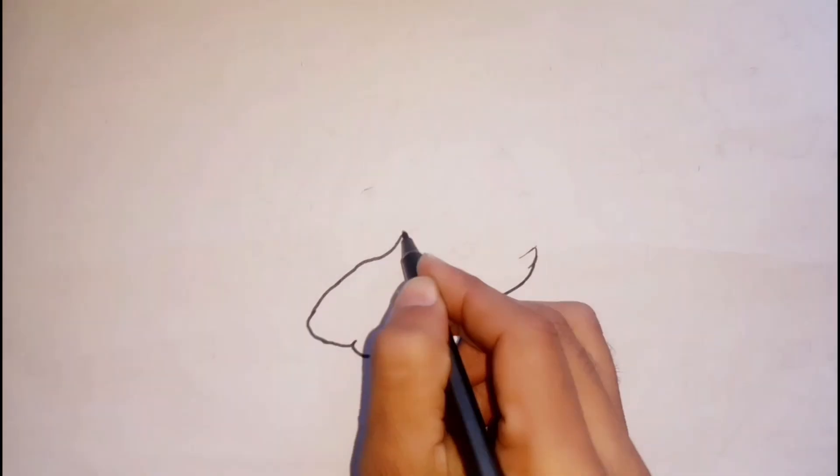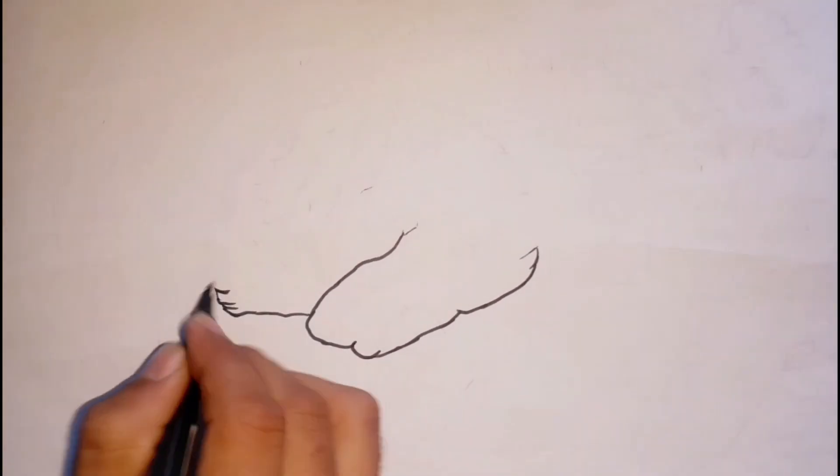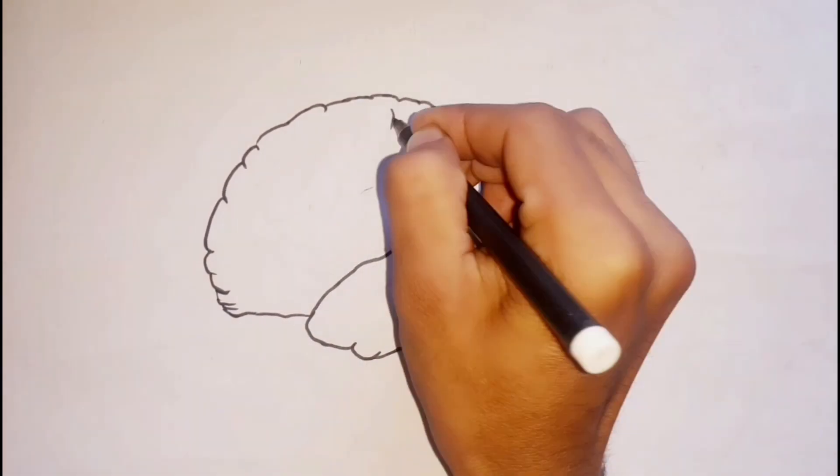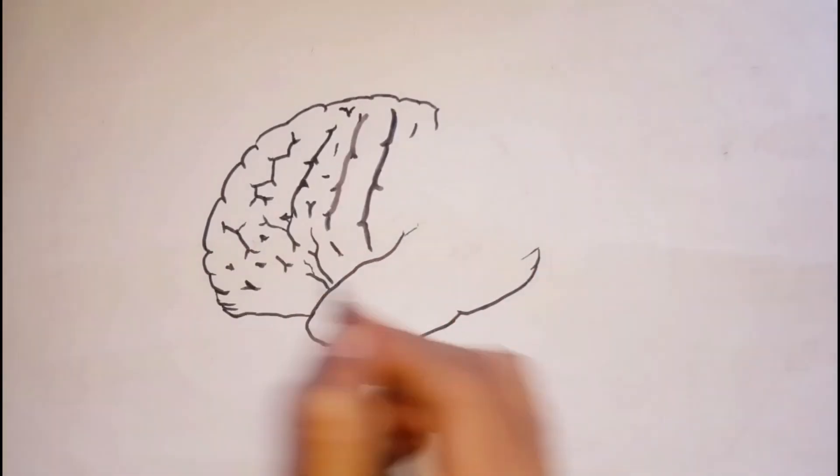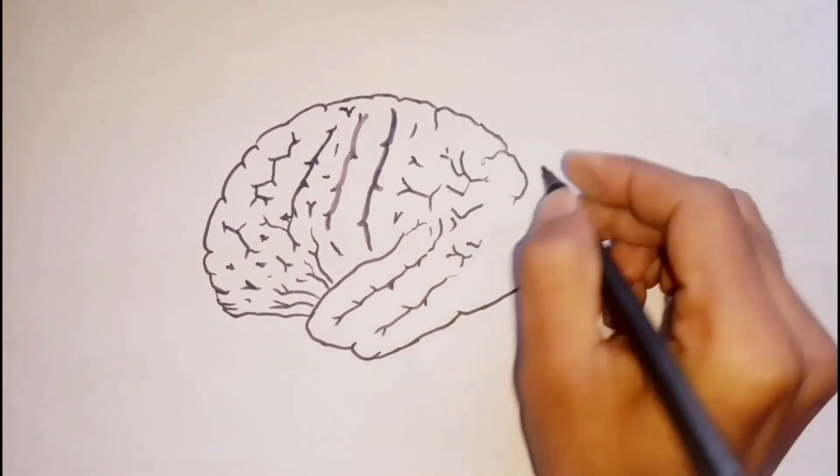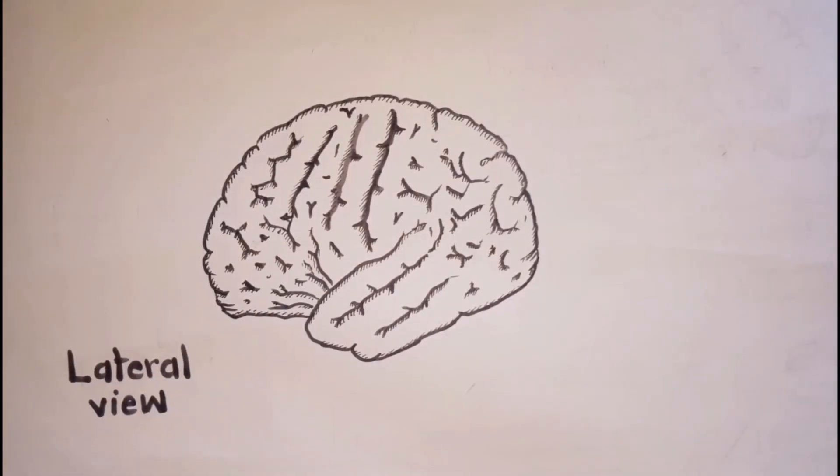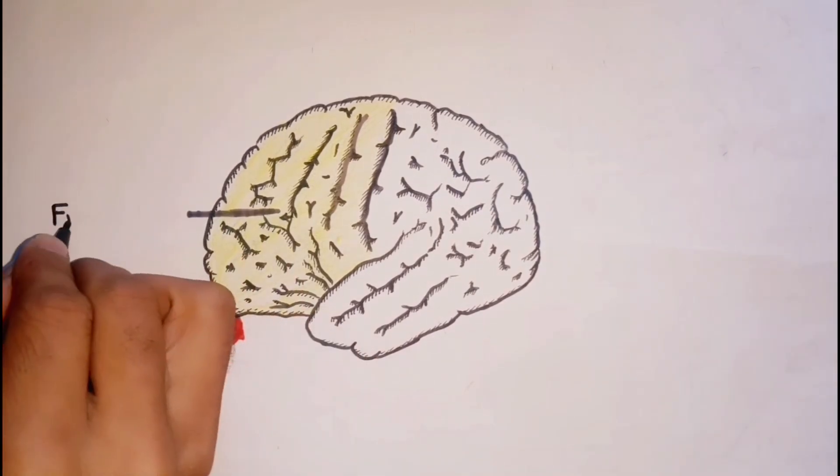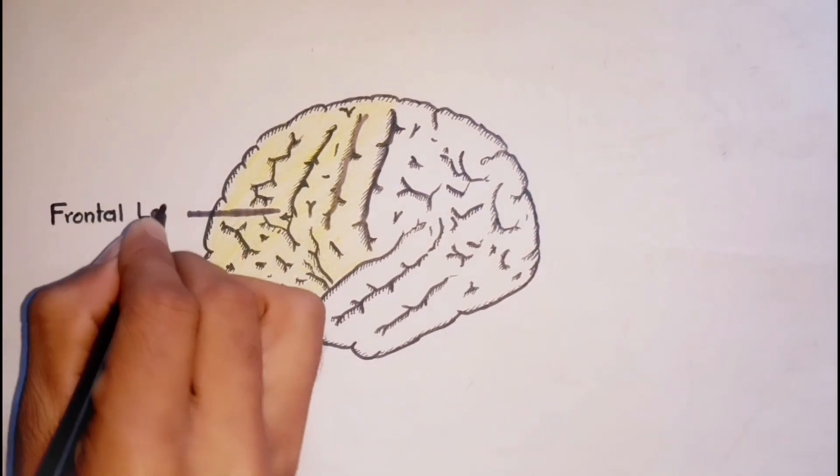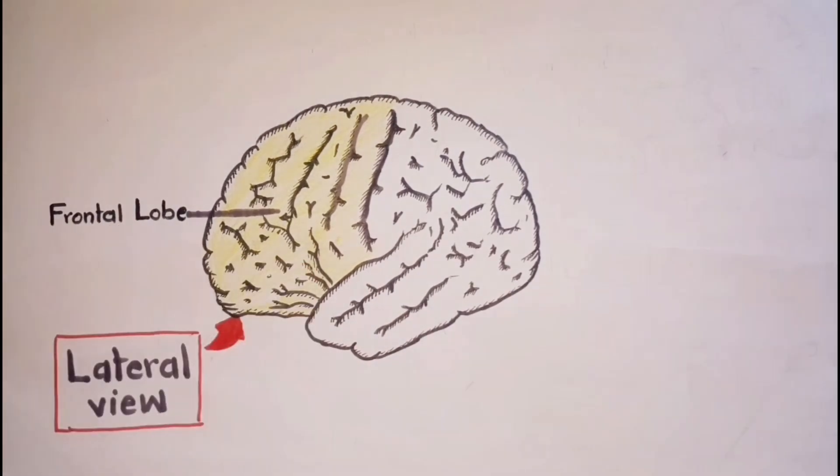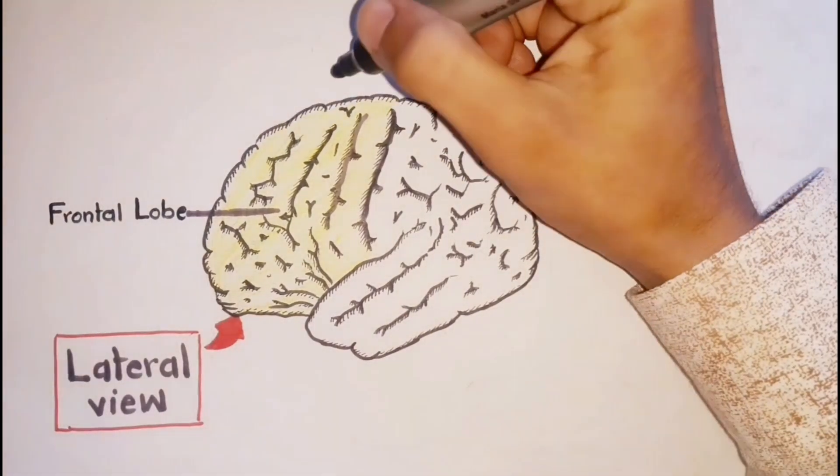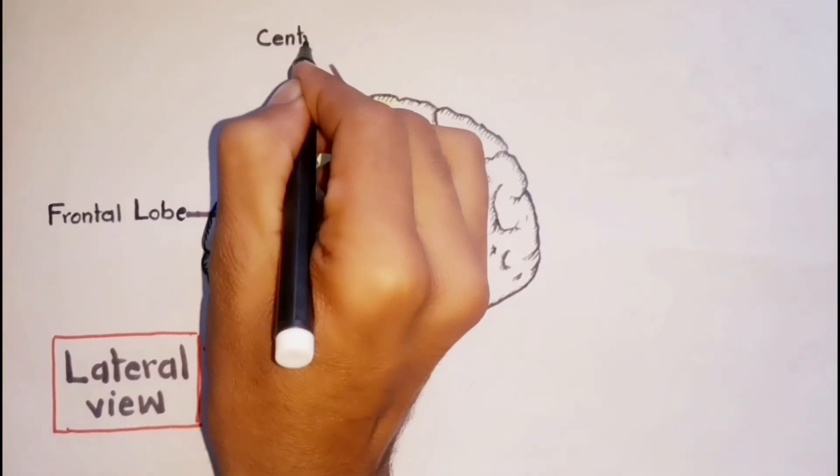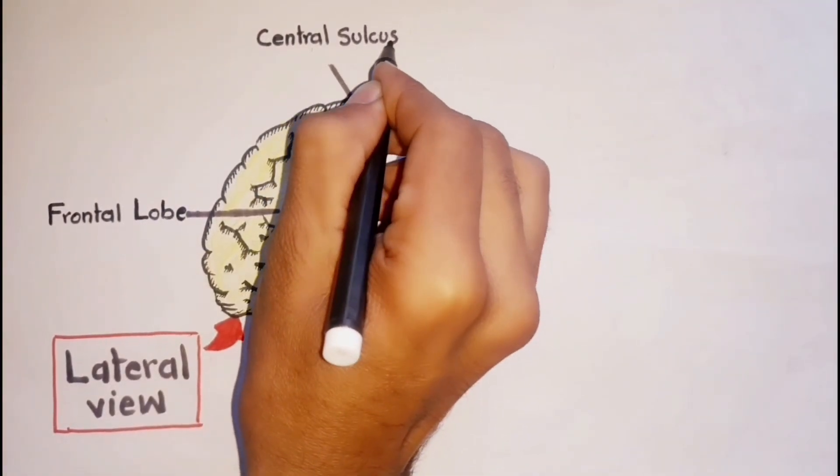The lobes of the cerebral hemispheres are named after the skull bones they underlie. Here I'm drawing the lateral view of the brain. This is your frontal lobe, which forms the anterior part of each cerebral hemisphere. It is bordered posteriorly by a central sulcus.